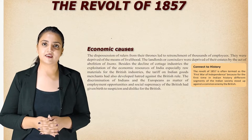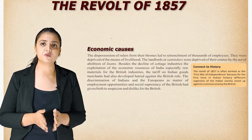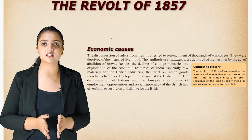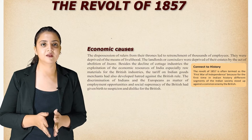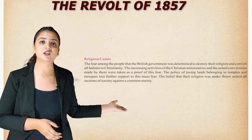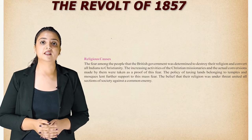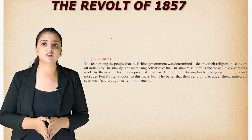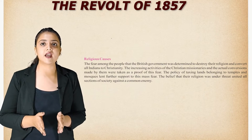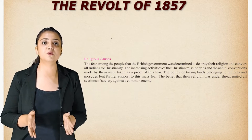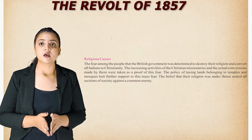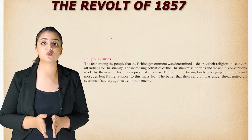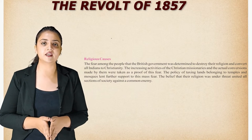The revolt of 1857 is often termed the first war of independence because for the first time in Indian history, different segments of Indian society stood up against a common enemy — the British. Regarding religious causes, the fear among people that the British government was determined to destroy their religion and convert all Indians to Christianity was widespread. The increasing activities of Christian missionaries and actual conversions were taken as proof of this fear. The policy of taxing lands belonging to temples and mosques lent further support to this mass sphere of anxiety, uniting all sections of society against the common enemy.